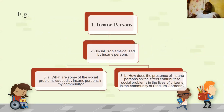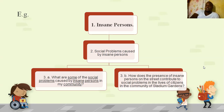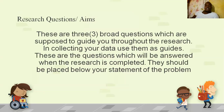For example, if you're looking at insane persons, the topic is insane persons and you're looking specifically at social problems caused by insane persons. A sample question would be: 'What are some of the social problems caused by insane persons in my community?' or 'How does the presence of insane persons on the street contribute to social problems in the lives of citizens in the community of Stadium Gardens?' Research questions are aims — three broad questions which guide you throughout the research and should be placed below your statement of problem.